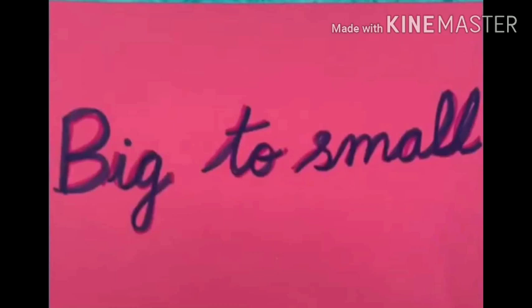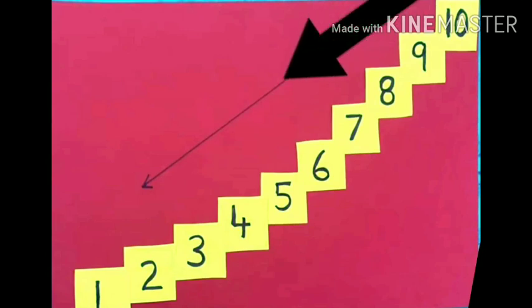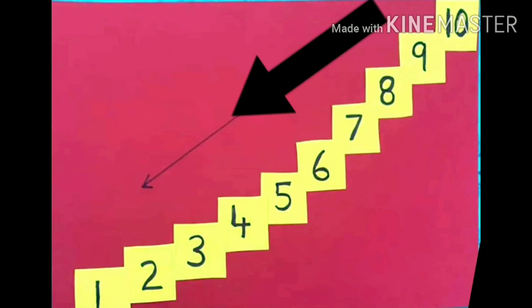Descending means big to small. Bigger number to smaller number. Now children, can you see the stairs? Yes. Here are numbers from 1 to 10 and in descending order 10 to 1. This arrow shows the descending order from 10 to 1: 10, 9, 8, 7, 6, 5, 4, 3, 2, 1.